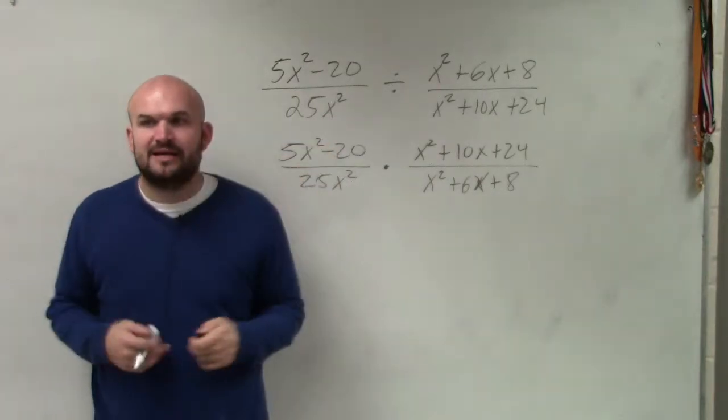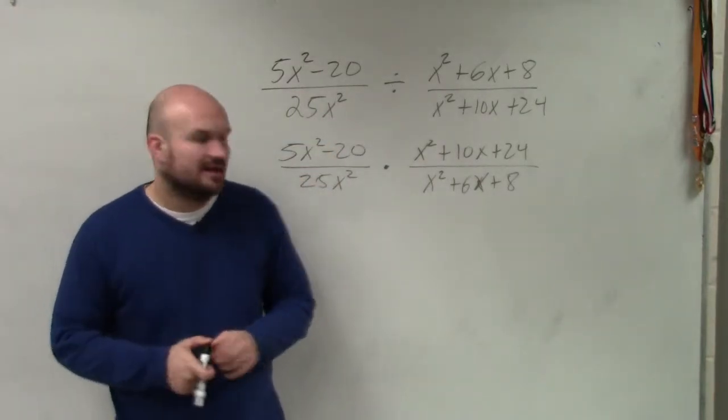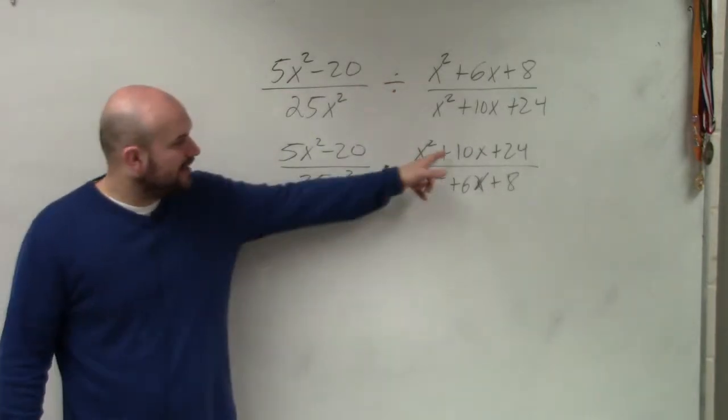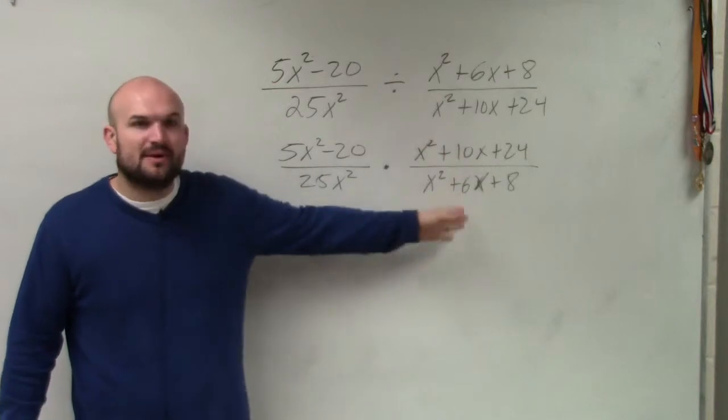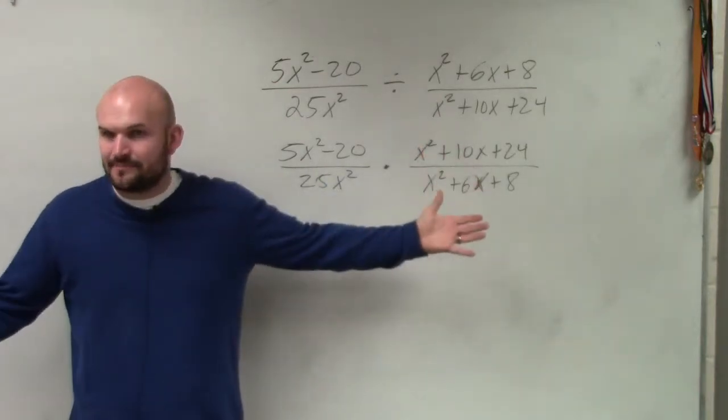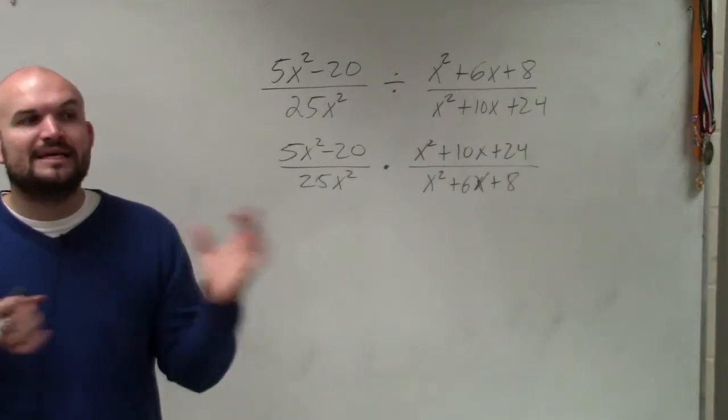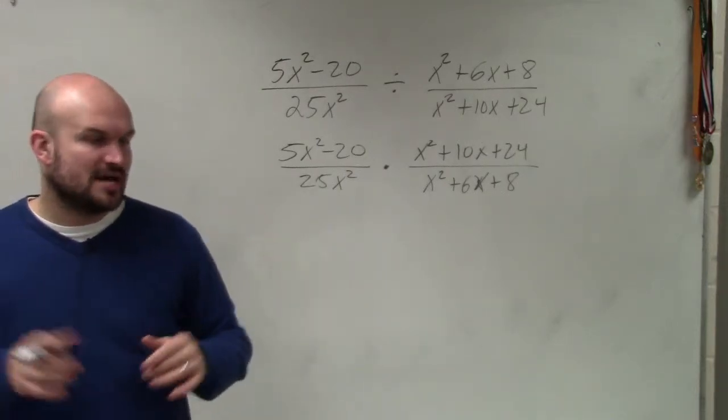Again, let me hit on the common mistake that people make. They'll say, oh, let's divide up the x squareds. No. The x squareds are separated by addition and subtraction. You can't do that. However, if we can rewrite them as a product, we can divide across addition and subtraction.